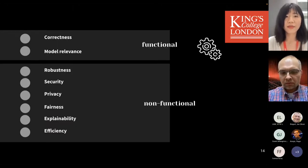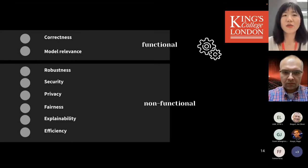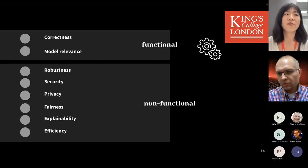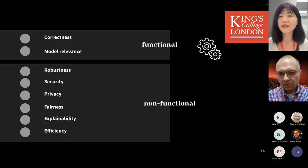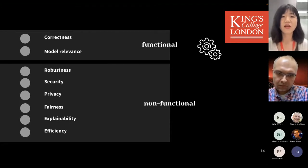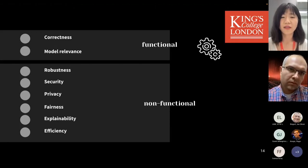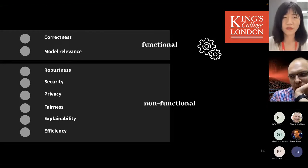We classify properties into functional and non-functional. Functional properties include correctness — traditional performance metrics like accuracy, precision, and recall — and model relevance, meaning how the model fits the data. Non-functional properties include robustness, security, privacy, fairness, and efficiency. These are now more trendy and are more about whether humans can trust the ML models deployed online.